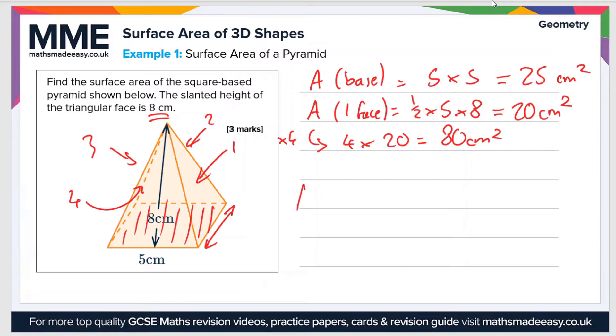So now for the total area of the pyramid, we add the area of the base to the area of the four triangular faces. So that is 80 plus 25, which is 105 centimeters squared.